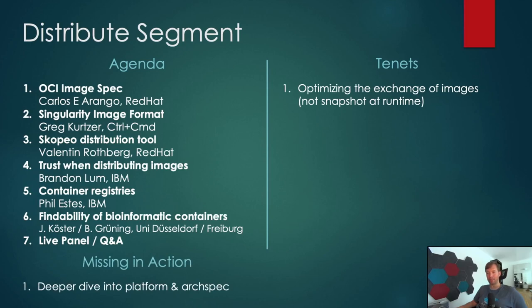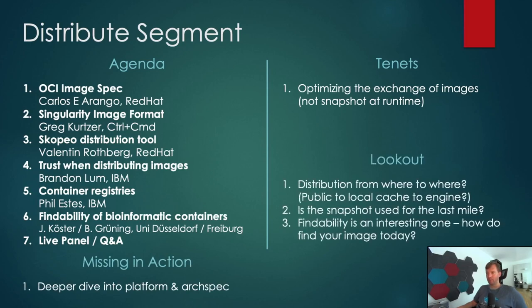Something missing from the agenda is a deeper dive into platform and architecture aspects, similar to the build piece — that's something we should flesh out next time. An important concept to understand is distribution from where to where. You could argue that distribution from a public repository or registry like Docker Hub to your local repository or registry within your on-premises cluster is one way of distributing.